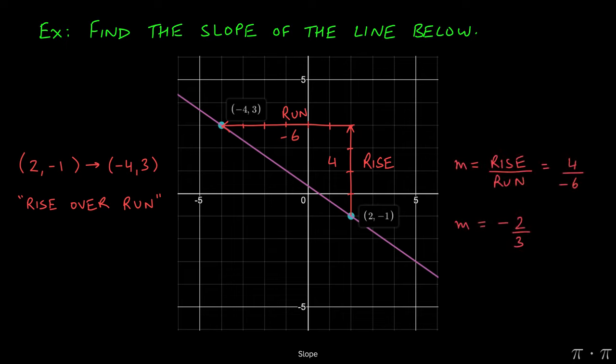Now remember that the slope, again, is rise over run. Here we divide 4 by negative 6. Reducing this fraction, we get negative 2 over 3, which is the same slope we had earlier.